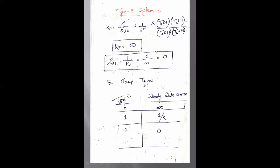Summarizing for ramp input: for type 0 system, steady state error is infinity; for type 1 system, steady state error is 1/K; and for type 2 system, steady state error is 0.